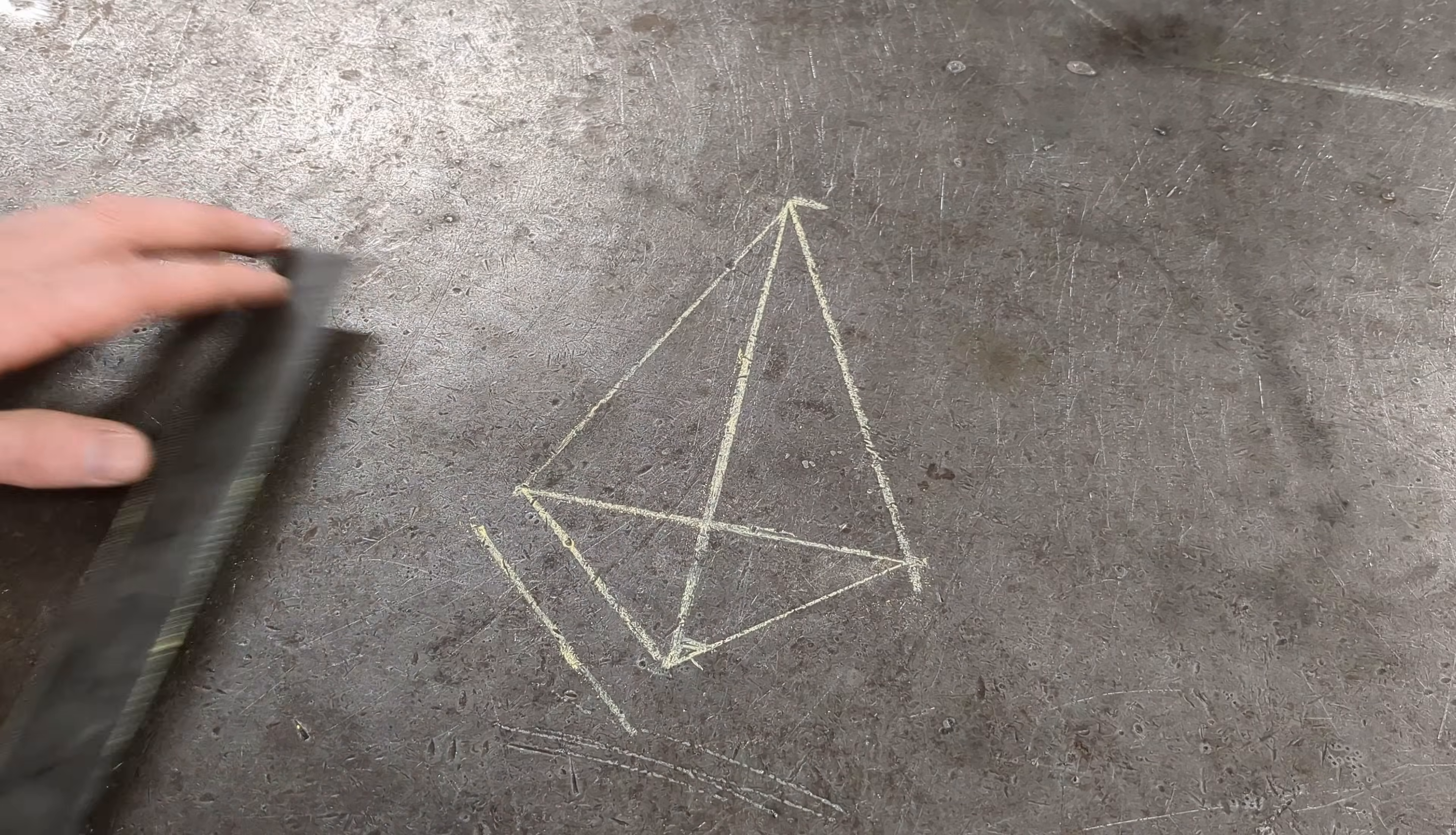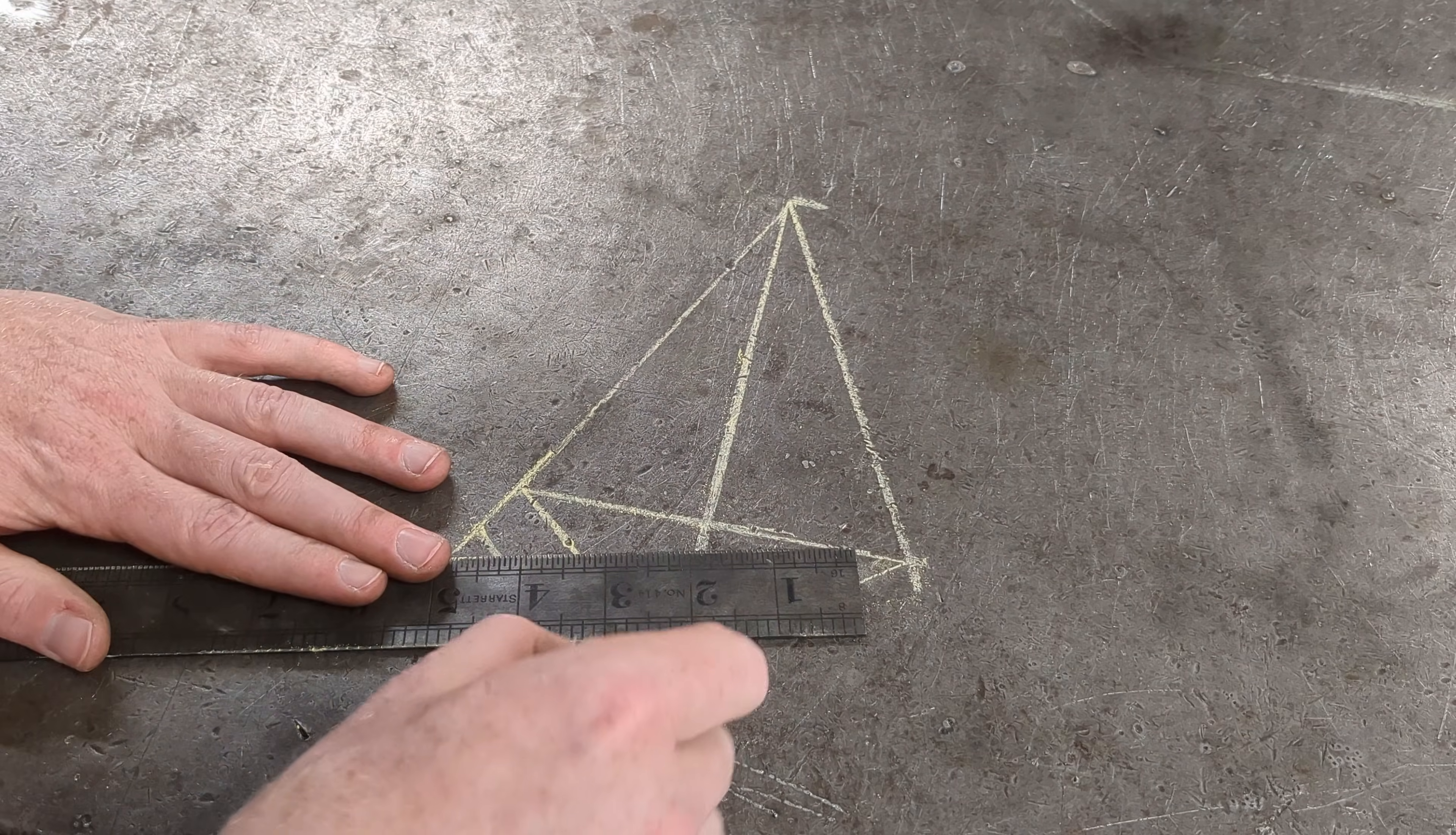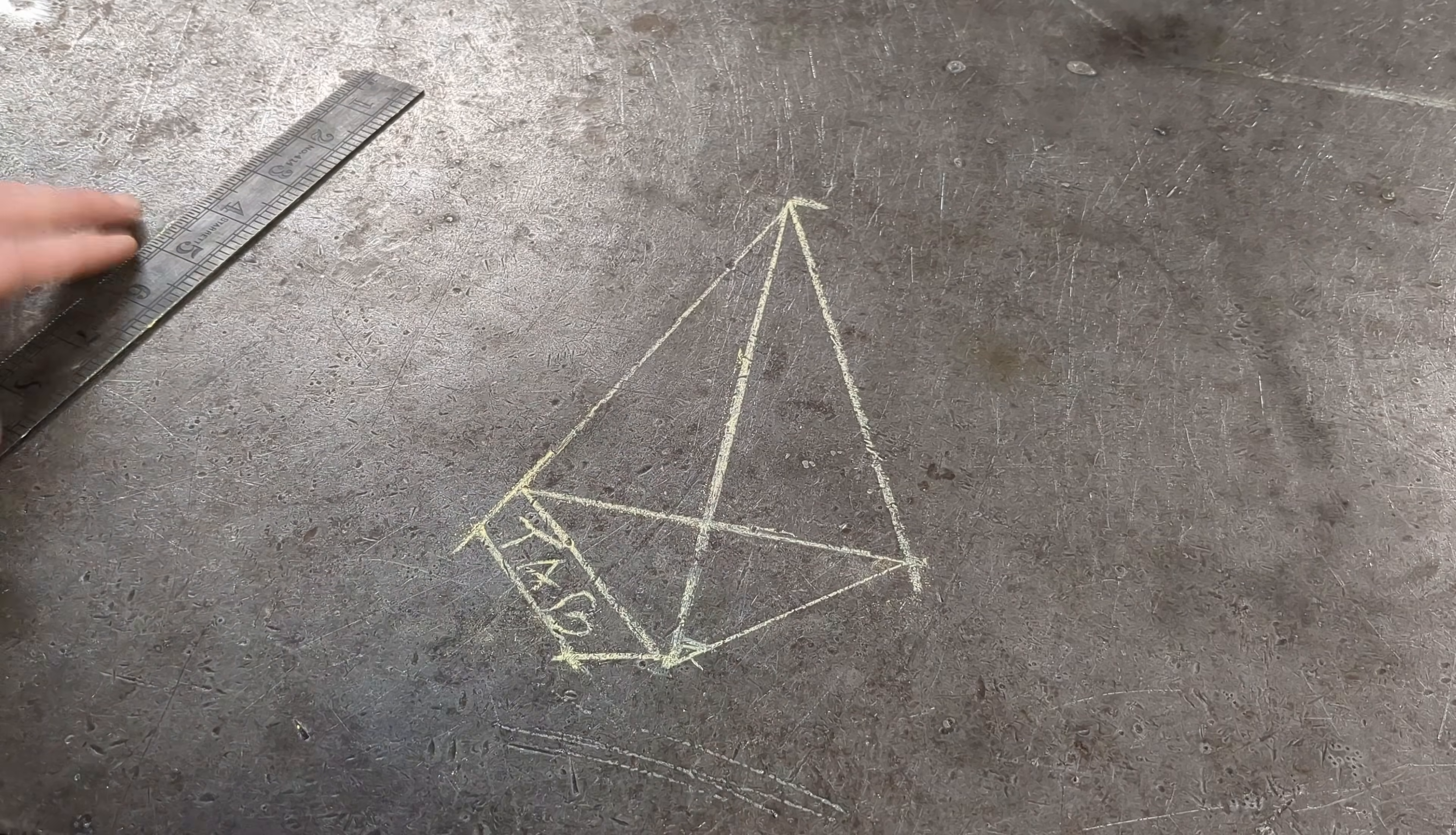To finish your tab, extend your upper line from your diamond down. And then from the bottom point of the diamond, mark a line at about 25 to 30 degree angle. Cut that shape out of paper, cardboard, or another scrap piece of metal, and you're ready to go.